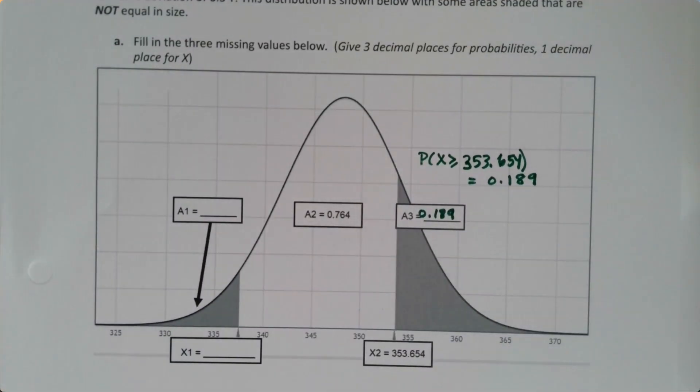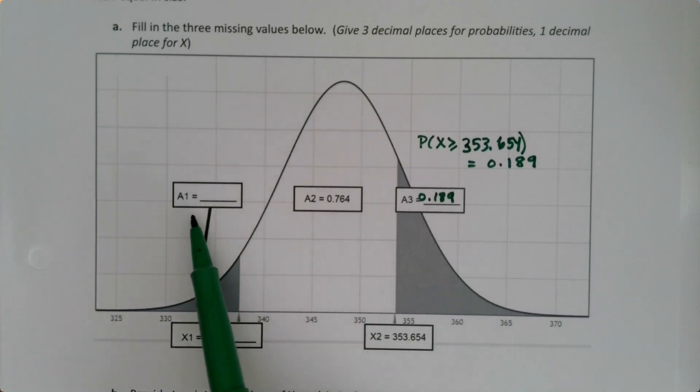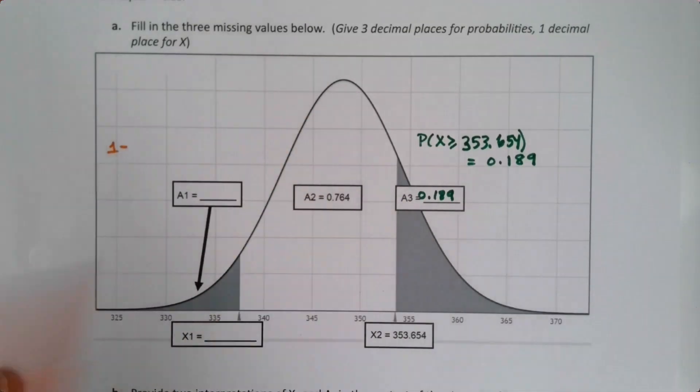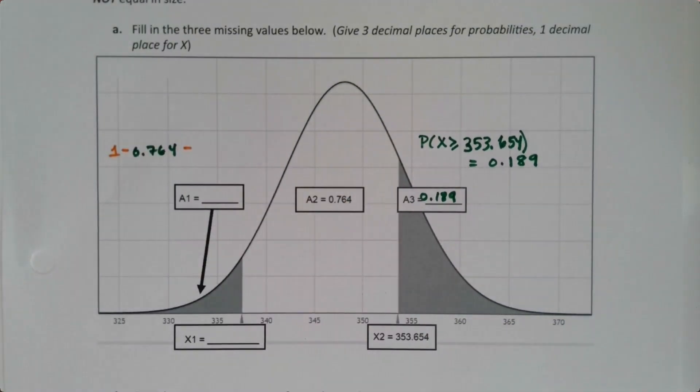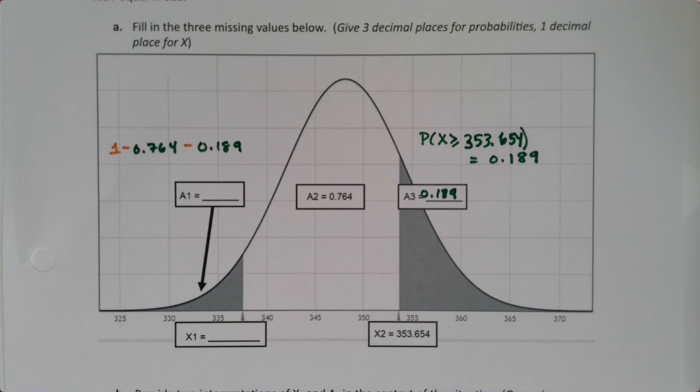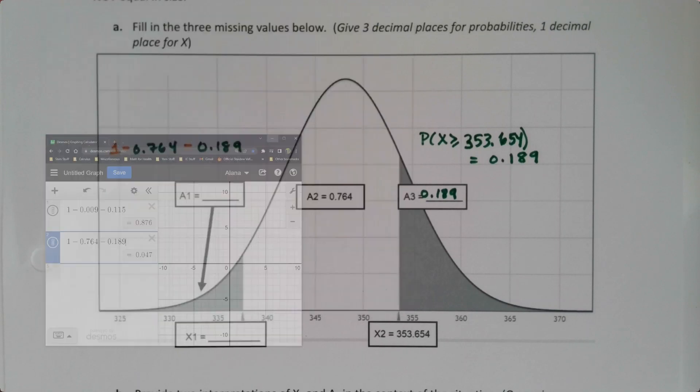Okay, so now let's find this area over here because I know that the three areas have to add up to one. So if I take one and I take away the known areas of 0.764 as well as 0.189, if I subtract those both from here I'll be able to find it. So 1 minus 0.764 take away 0.189 and I get 0.047.